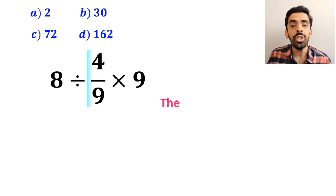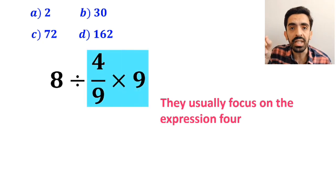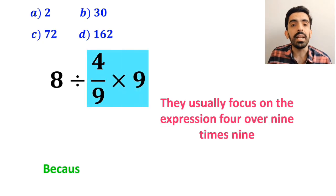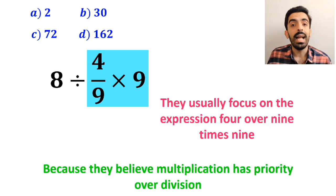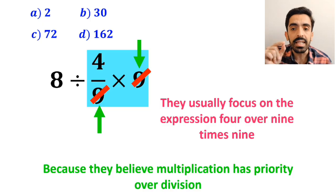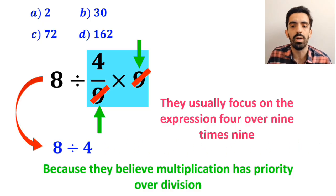In the next step, they usually focus on the expression 4 over 9 times 9, because they believe multiplication has priority over division. As you can see in the image, they very easily cancel out the 9s and rewrite this expression as 8 divided by 4.